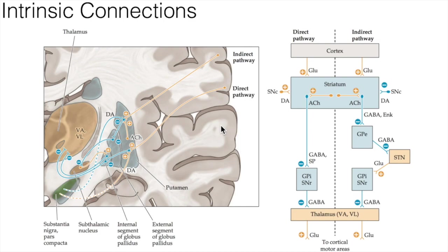The pathways through the basal ganglia consist of multiple parallel circuits that share certain features. The basic circuitry can be divided into a direct and an indirect pathway, and these two pathways have opposing actions on targets of the basal ganglia. As a general concept, the direct pathway facilitates the flow of information through the thalamus, while the indirect pathway inhibits this flow. These pathways create a kind of equilibrium or balance in the inhibitory outflow of the basal ganglia, modulating the extent of this inhibition on target nuclei.